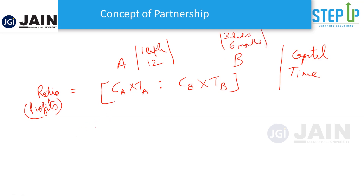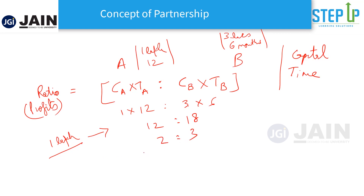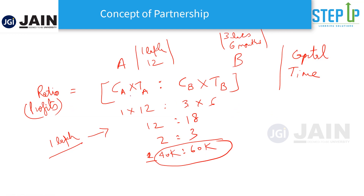Let's take an example where A put in 1 lakh rupees and was there for the entire 12 months, whereas B invested 3 lakh rupees but was only there for 6 months. If they made a profit of 1 lakh rupees at the end of the year, how should the profits be divided? It should be 1×12 versus 3×6, which is 12 to 18, or simplified to 2 to 3. That means 2/5 of 1 lakh is 40,000 and 3/5 is 60,000. This is how they should divide the profit — in the ratio of the product of capital and time.